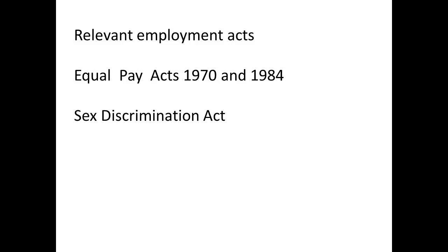The two major acts to prevent discrimination determined that an employer could not offer two different rates for the same job, and that men and women were entitled to the same pay if they did the same job. In addition, an employer could not discriminate between men and women for a job. There is still some way to go to achieve these objectives: the proportion of women in the part-time workforce is far greater than 50%, and median earnings of women are only around 70% of those of men.